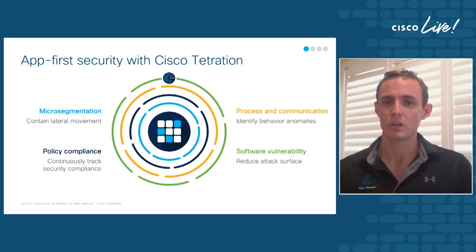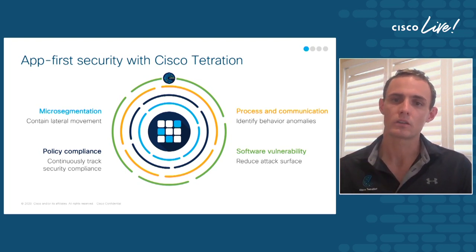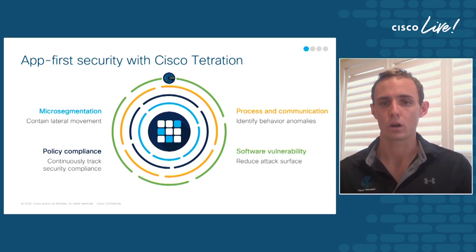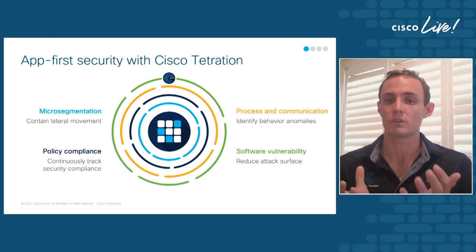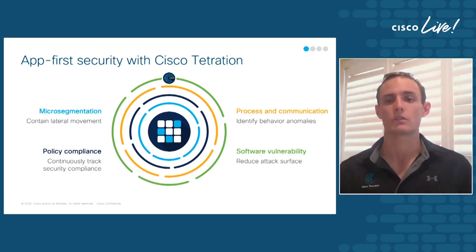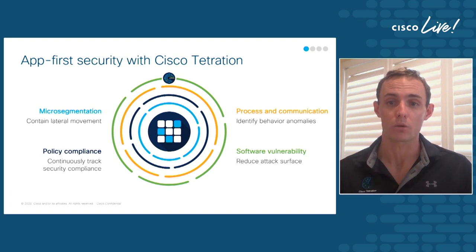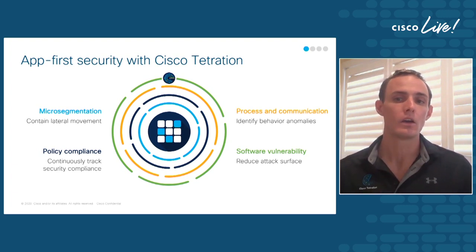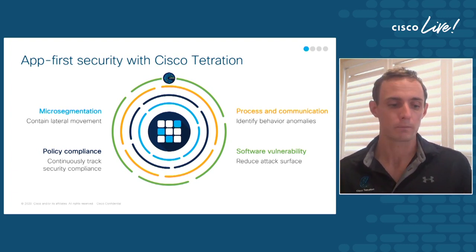Thirdly, process and communication information within Tetration can be used to identify and make decisions based on behavioral anomalies — excellent information to better harden these modern and very dynamic workload environments. And last but certainly not least, we bring all this together to do detailed analysis to understand what we call the attack surface of your applications: what communication elements are open but not required, and what software vulnerabilities need to be patched or mitigated. We collect and process large volumes of information to make fact-based decisions on how best to reduce the attack surface.